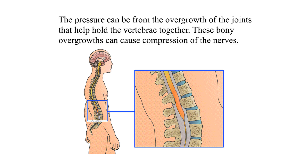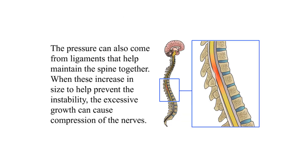The pressure can be from the overgrowth of the joints that help hold the vertebrae together. These bony overgrowths can cause compression of the nerves. The pressure can also come from ligaments that help maintain the spine together. When these increase in size to help prevent the instability, the excessive growth can cause compression of the nerves.